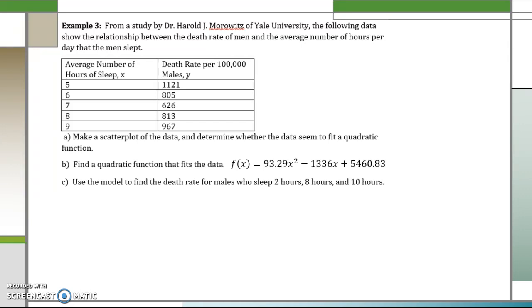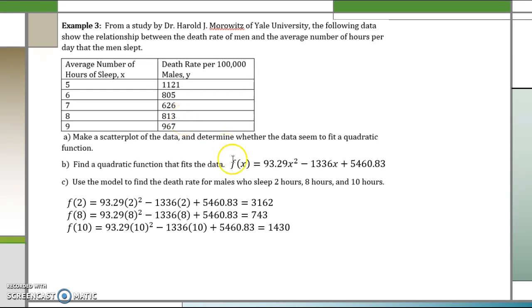Part c is asking us to find the death rate for males who sleep 2 hours, 8 hours, and 10 hours. So now that we have our model, we can go ahead and use the model to plug in for f(2). So wherever I see x I'm going to put 2, which is approximately 3162 deaths, which seems to be accurate considering 2 is so much smaller on the list here and looking at the data points it should be extended. If we do f(8) we get approximately 743 which is nearly and very close to our data points, and then for 10 hours we see that our rate continues to go up a little bit.